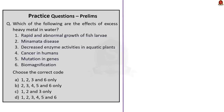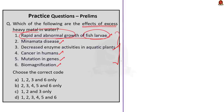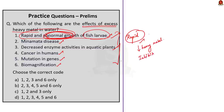The next question: which of the following are effects of excess heavy metals in water? Options include: (1) rapid and abnormal growth of fish larvae, (2) Minamata disease, (3) decreased enzyme activities in aquatic plants, (4) cancer in humans, (5) mutation in genes, (6) biomagnification. The first statement — rapid and abnormal growth of fish larvae — is incorrect. When heavy metals enter the system, they inhibit the growth rate. One of the most noticeable signs of metal toxicity in fish larvae is growth inhibition, not rapid growth.